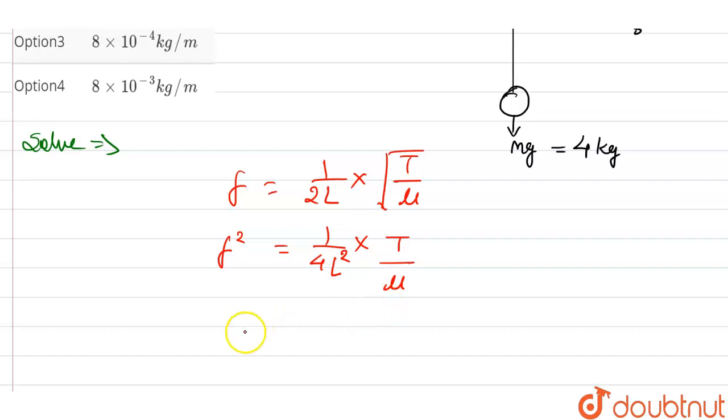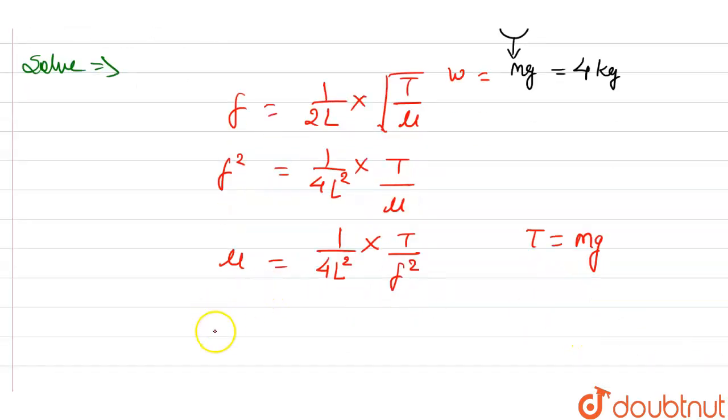We rearrange to get mu is equal to 1 upon 4L square into T by F square. And we know that the tension is equal to mg.